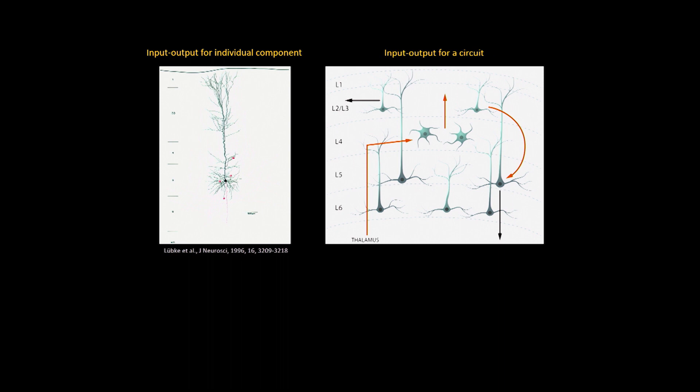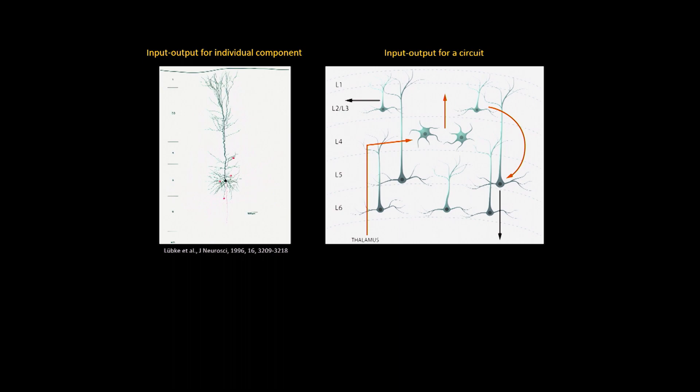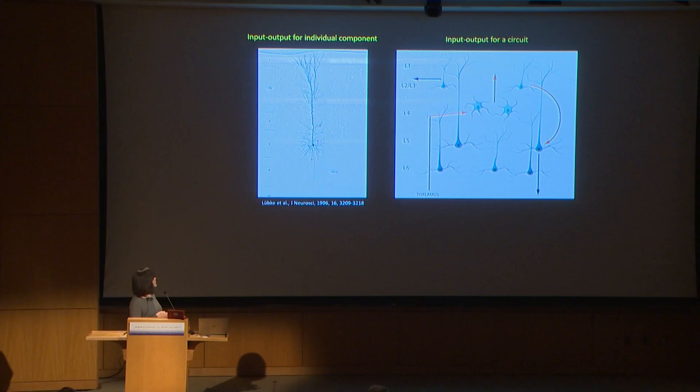The first set of questions is how a single neuron operates. For example, a single neuron in the cortex may receive 10,000 inputs. We want to know what those inputs are, and we also want to know how this individual neuron integrates all those inputs to generate an output signal — in other words, what is the input-output relationship for an individual neuron in the brain?